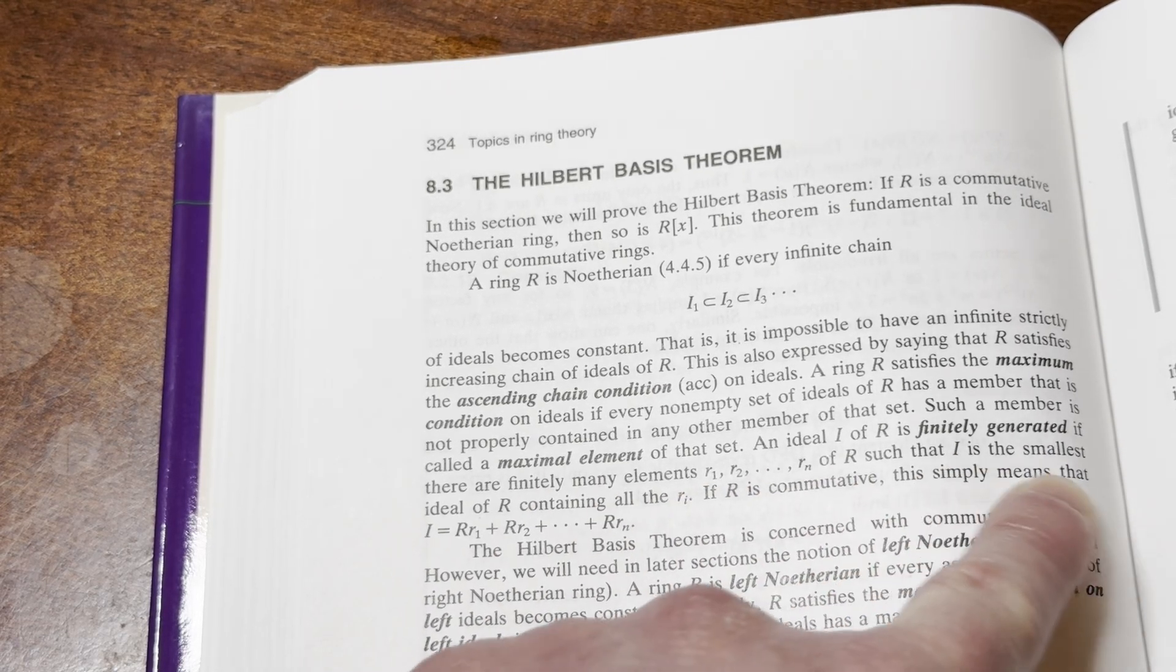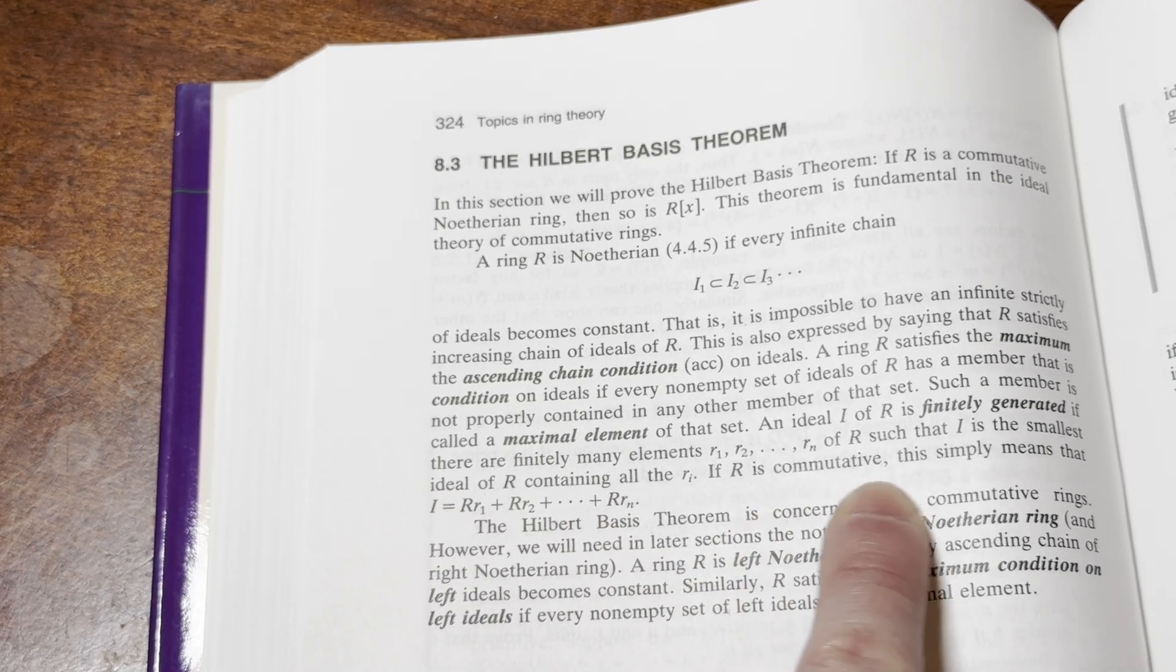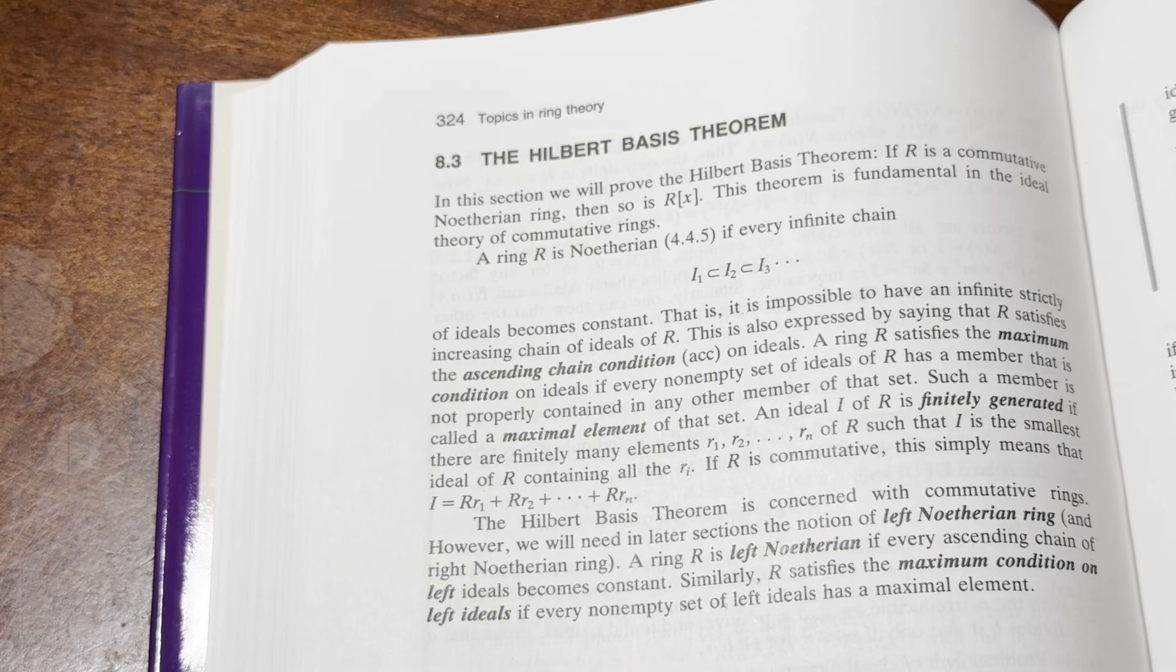An ideal I of R is finitely generated if there are finitely many elements, R sub 1 through R sub N of R, such that I is the smallest ideal of R containing all the R sub I. Yeah, this is cool. And if R is commutative, that simply means this equation here. And then here we go.